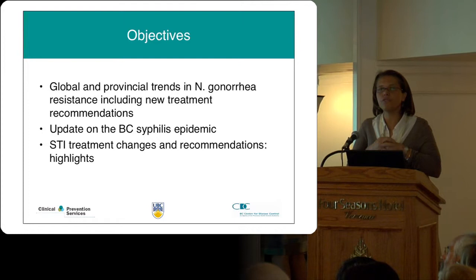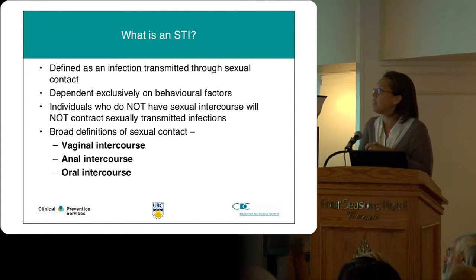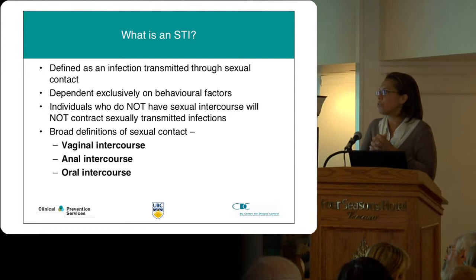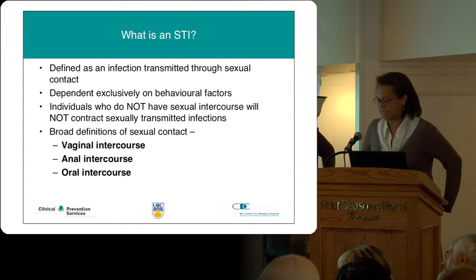Let's start at the beginning with what is an STI. An STI is defined as an infection transmitted through sexual contact. The unique element about STIs is they're actually dependent exclusively on behavioural factors — individuals who do not have sexual intercourse will not contract STIs. But remember, there are increasingly broad definitions of what sexual practice is, and that includes vaginal intercourse, anal intercourse, and oral intercourse.